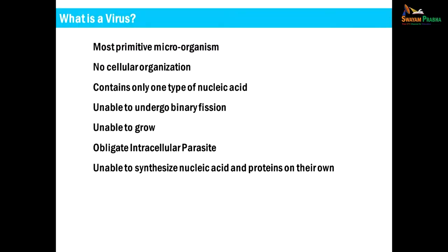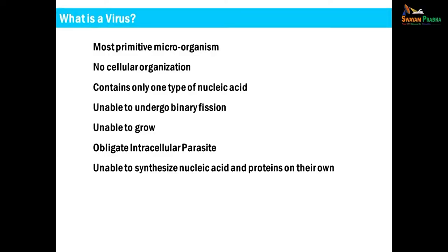So what is a virus? A virus is the smallest organism — the most primitive microorganism — without any proper cellular organization. It contains only one type of nucleic acid, either RNA or DNA, but never both simultaneously. It does not undergo binary fission but multiplies by a complex process. It cannot grow in size like other living organisms and must use the machinery of a host cell for synthesis of proteins and replication. Thus, it is an obligate intracellular parasite. Many human viruses have the ability to cause a large number of diseases in humans, many of which can be fatal.